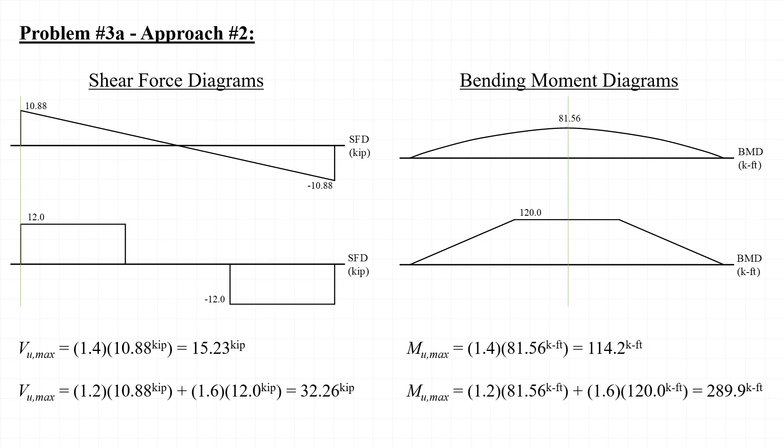We can then evaluate the load combinations for the bending moments, first applying load combination number 1 and then load combination number 2. Load combination number 2 results in the critical value of M sub U with a factored bending moment of 290 kip-feet. Note that when we apply the load combinations, we must apply them to magnitudes of shear force or bending moments at common locations along the beam for both the service dead and the service live. It would not be appropriate to mix shear forces from the dead load diagram at one location with shear forces from the live load diagram at a different location.